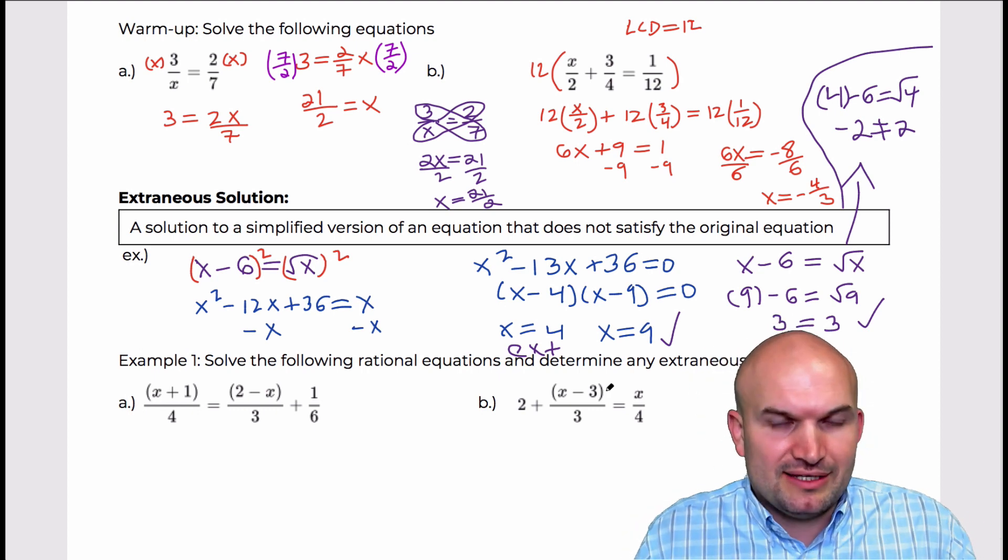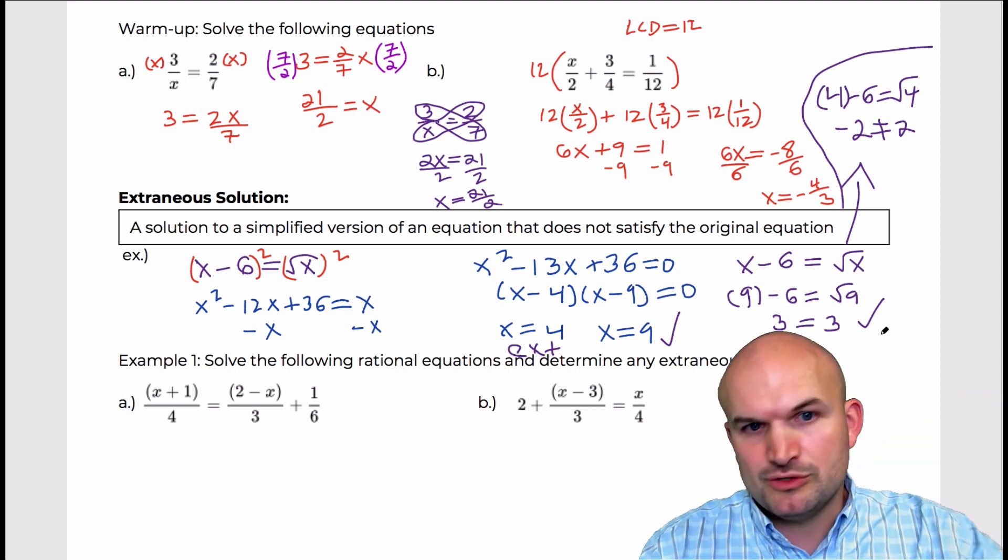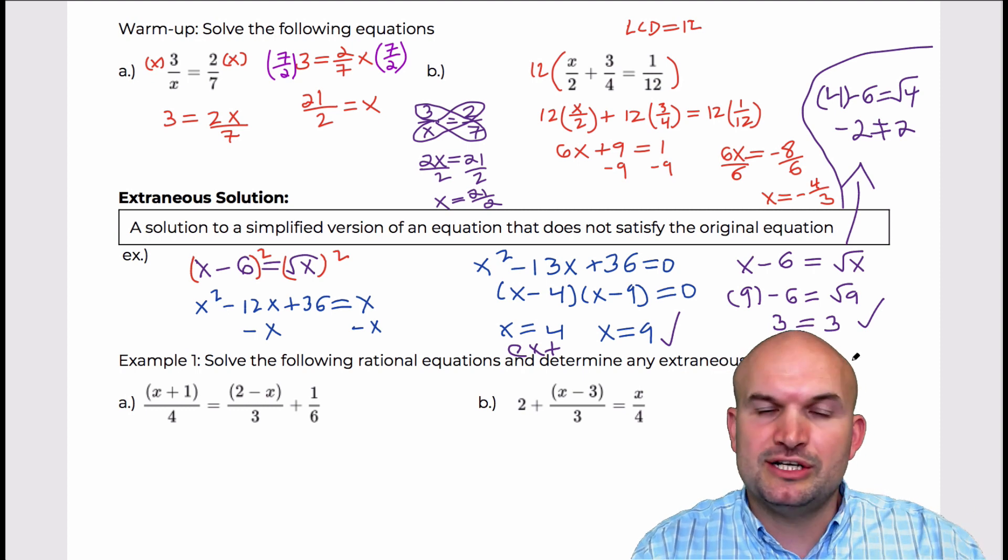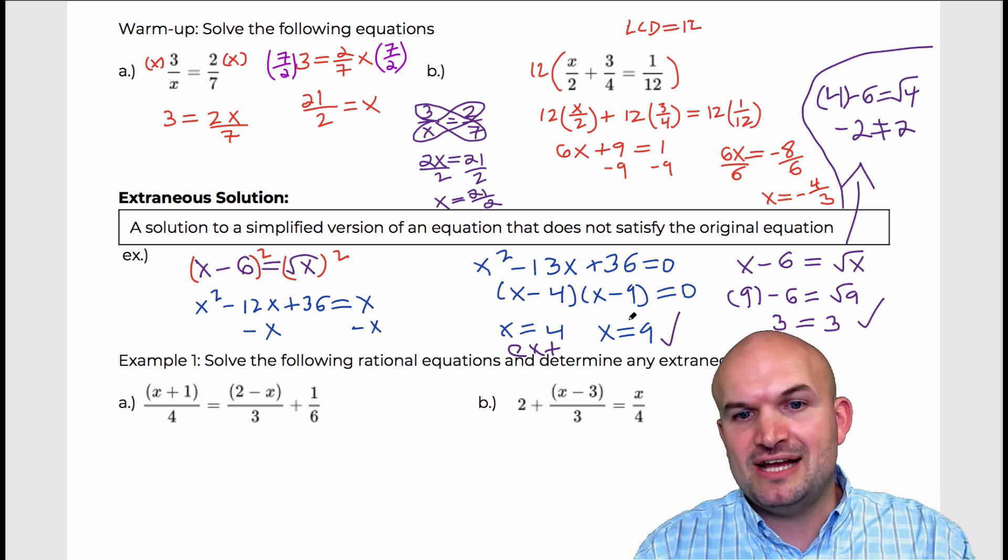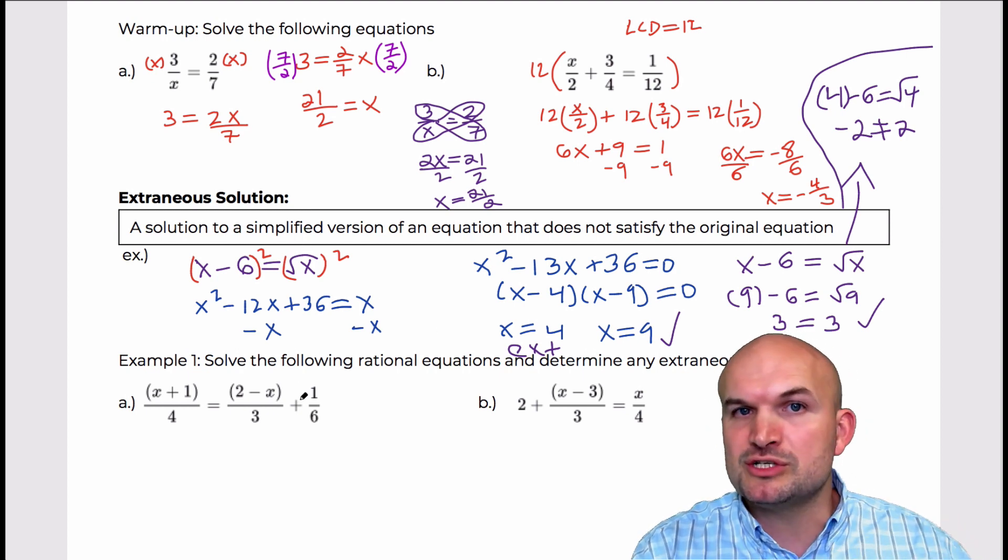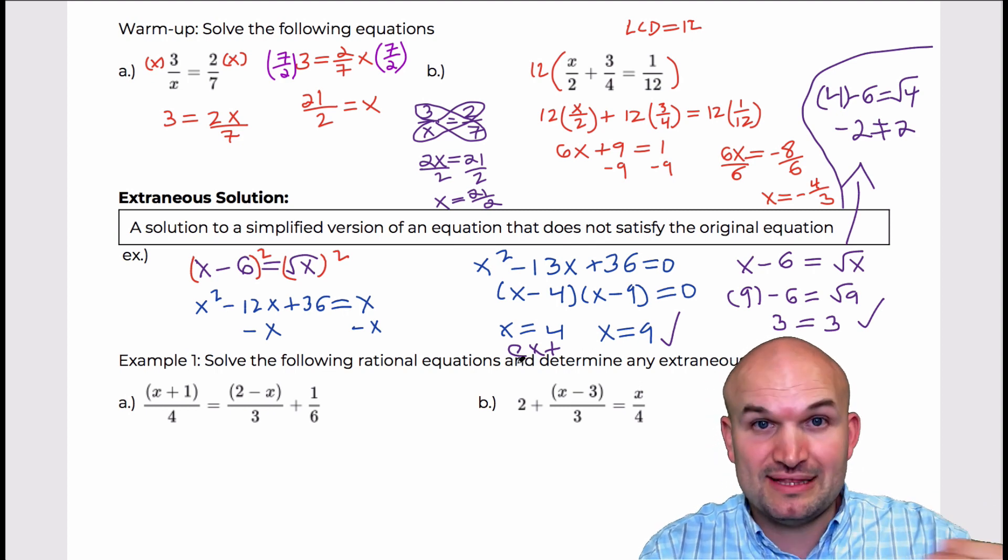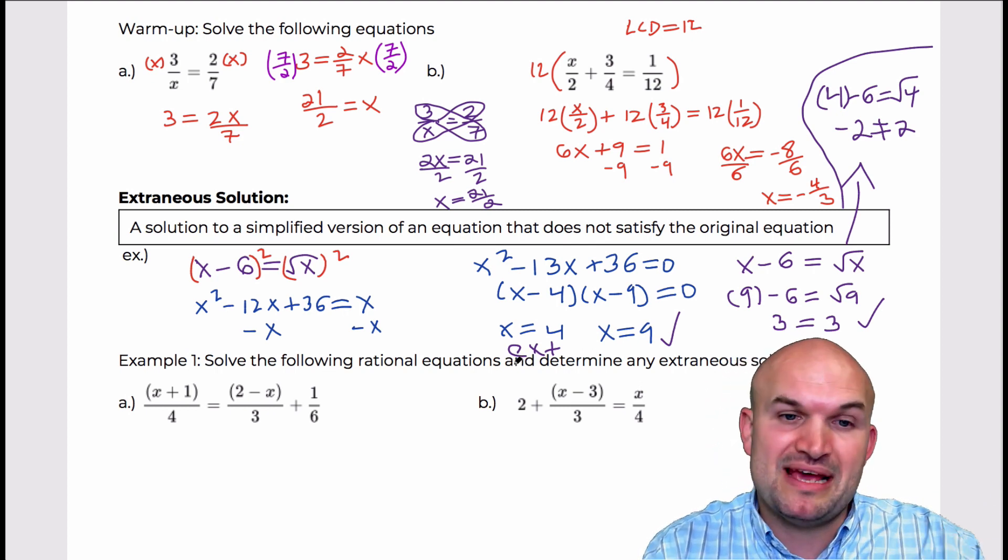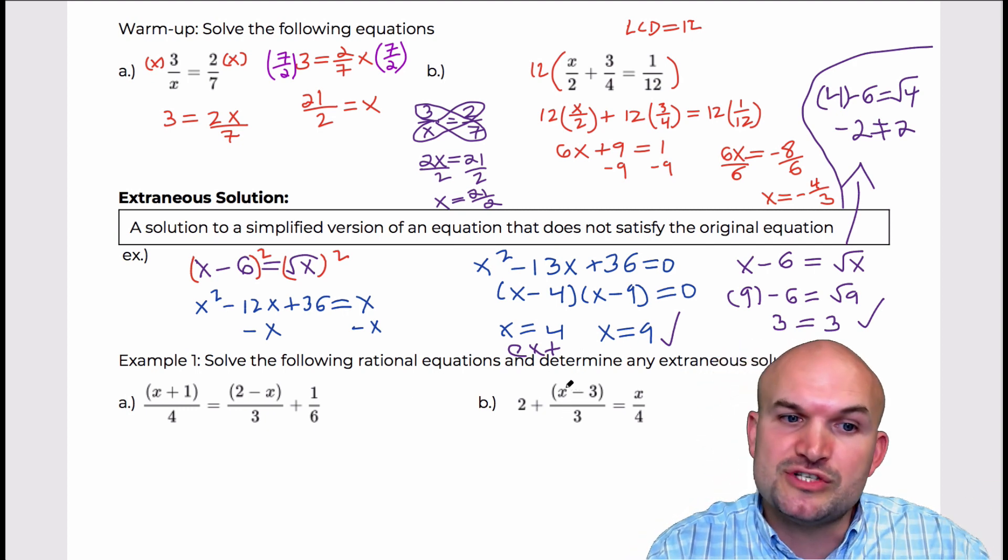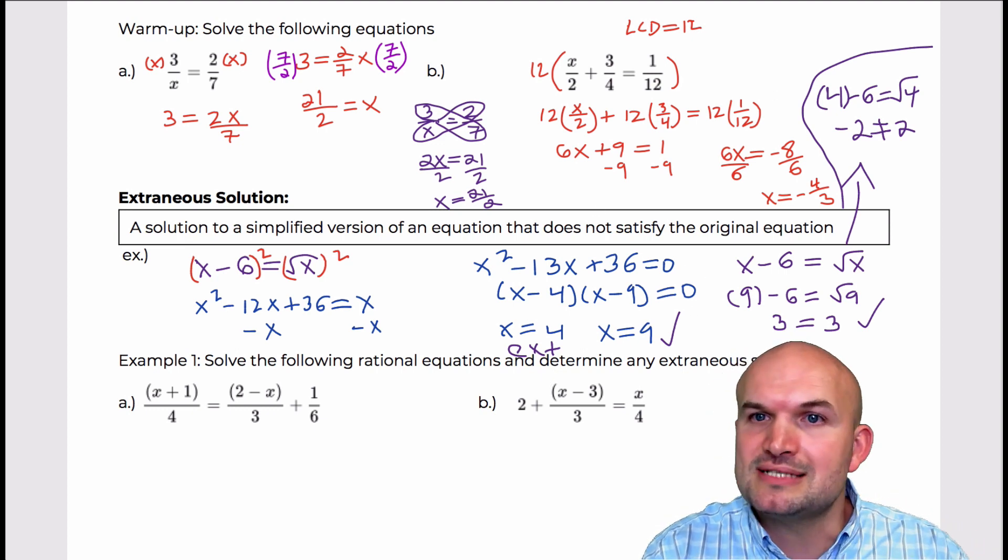So what we're going to do, and basically the way to identify is when we're solving these equations that we're going to be coming up, we're basically going to do everything the way that we know how to do. And then what we're going to do is we're just going to go back and test our solutions. So we're going to find our solutions, and then we're just going to make sure we test them by plugging them back into the original equation to make sure that they are not extraneous. And the one thing that they can become extraneous is if they make our denominator equal to zero. So for rational equations, you're going to have extraneous solutions if the solution makes one of the denominators equal to zero. So now let's go ahead and get on to example number one.